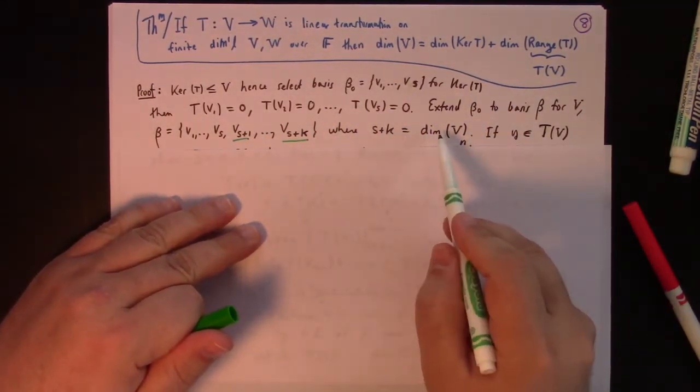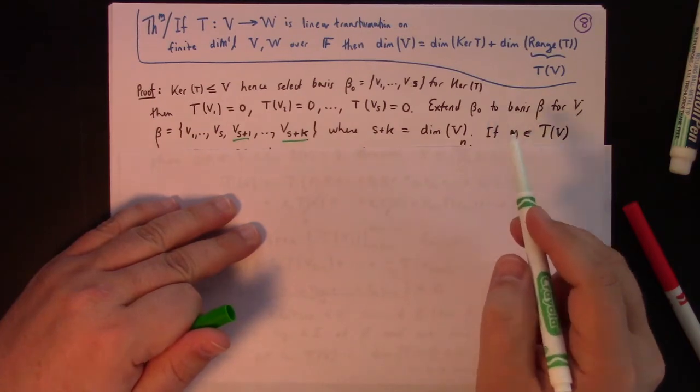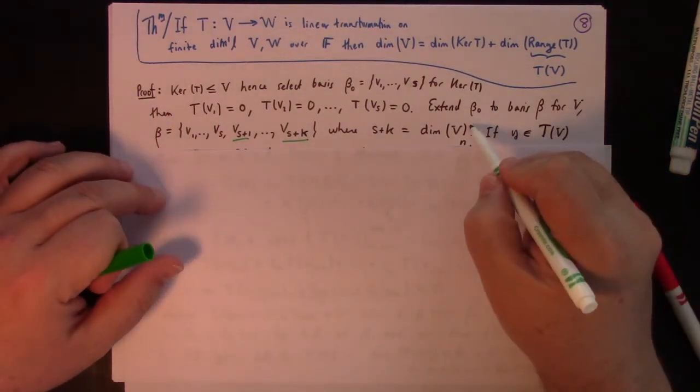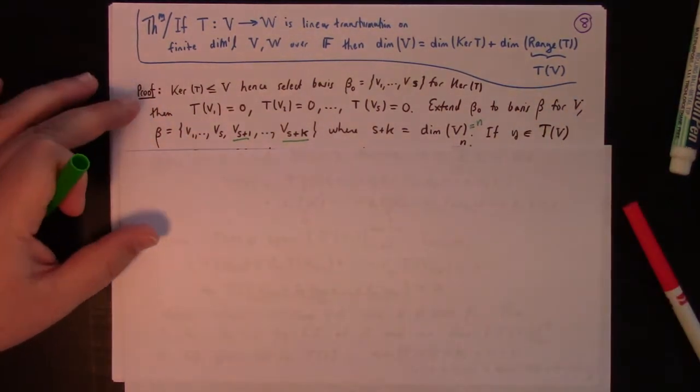Of course, s plus k has to be equal to the dimension of V, which I'm thinking of calling n eventually. All right? So, great.